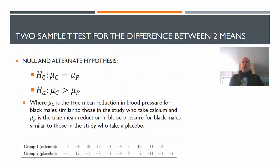The null and alternate hypothesis - we want to compare two means. Our null hypothesis is that mu sub c equals mu sub p versus the mean of the calcium group is greater than the mean of the placebo group.